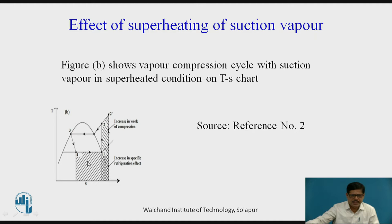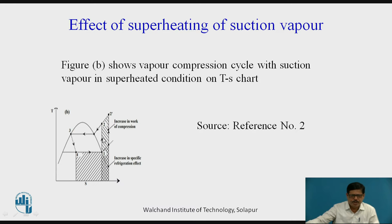The hatched area is for refrigerating effect for the simple saturated cycle when the suction vapor is dry and saturated. Whereas when it becomes superheated, there is an increase in specific refrigerating effect — that is, refrigerating effect per kg. So refrigerating effect is increasing, but at the same time, as the compression line shifts from 1-2 to 1 dash-2 dash towards the right, the work of compression also increases.